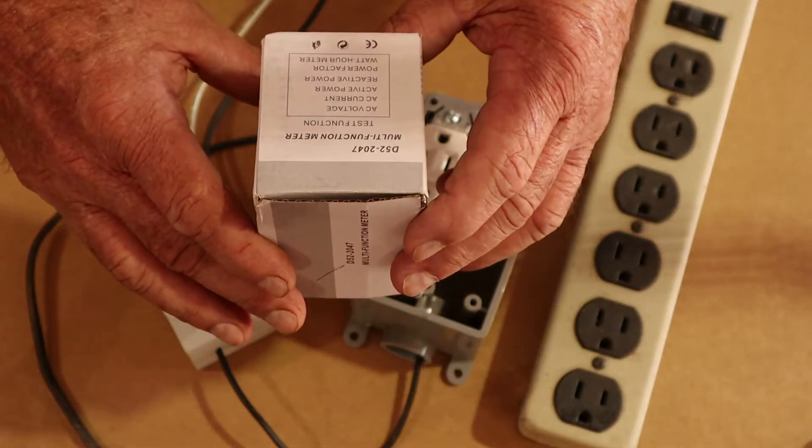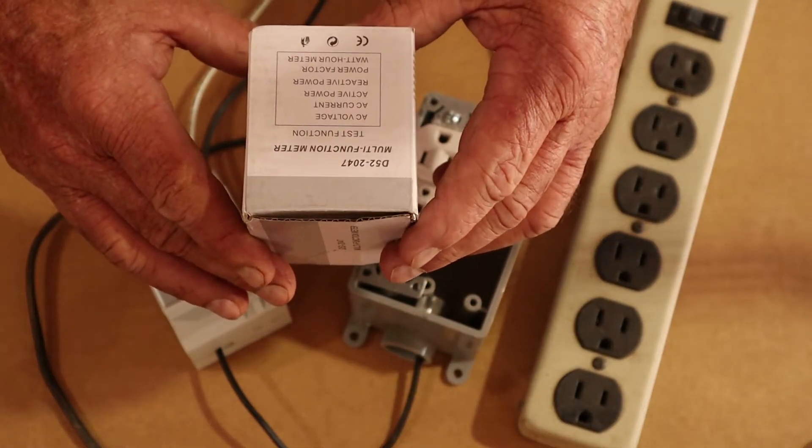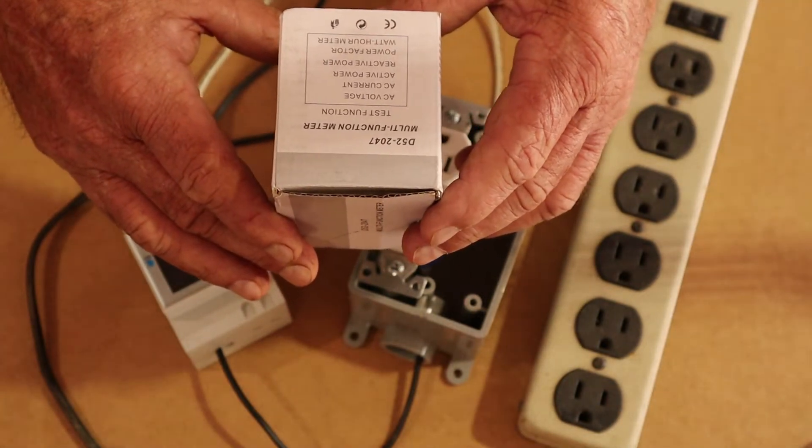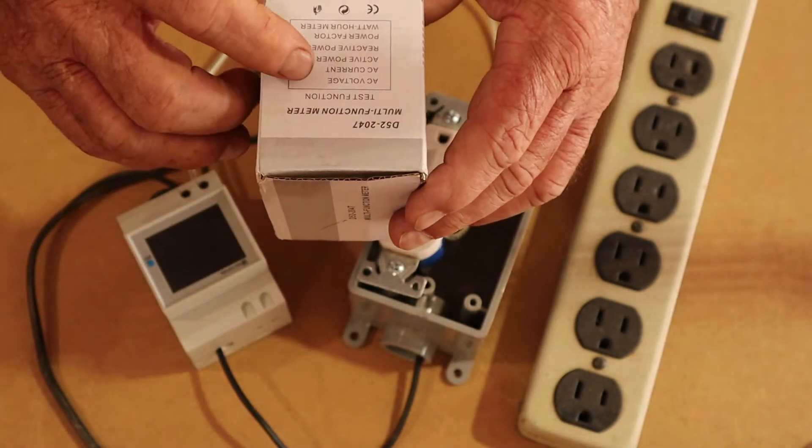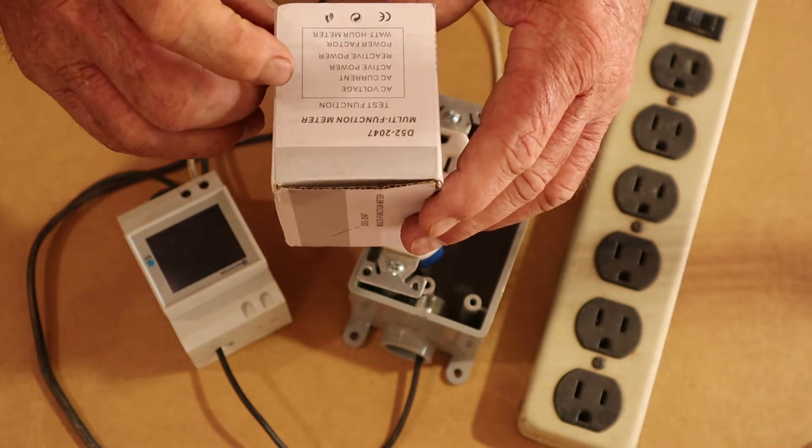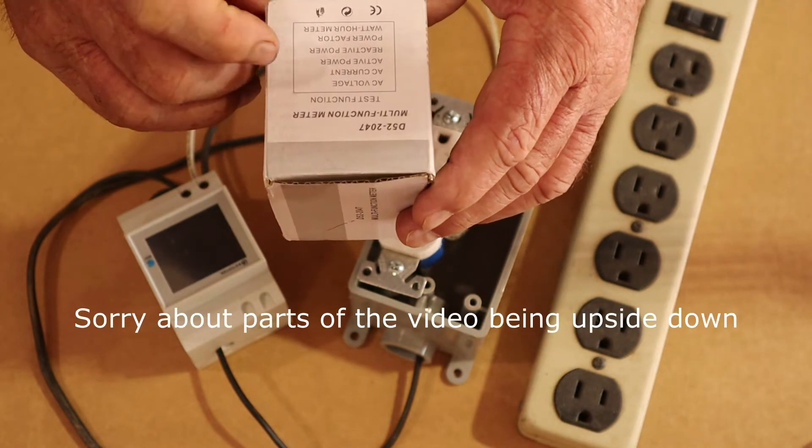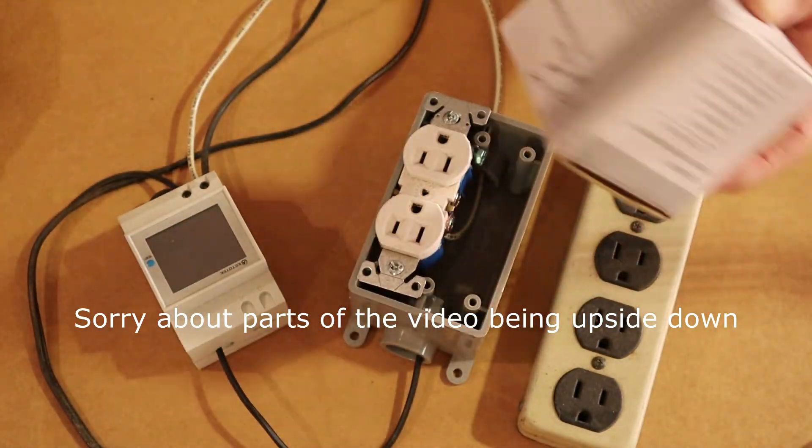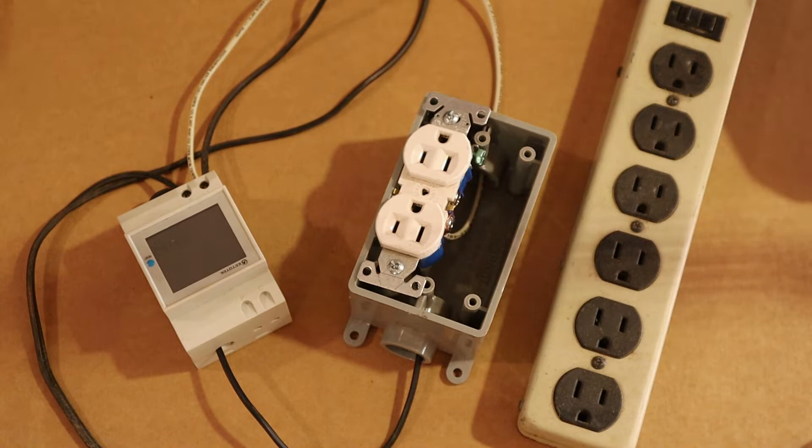It's a D52 147 multifunction meter. Its test functions are AC voltage, AC current, active power, reactive power, power factor and watt hour meter all built into one. It's a pretty cool little gadget and they're not that expensive. I think I got this one online for something like fifteen dollars.